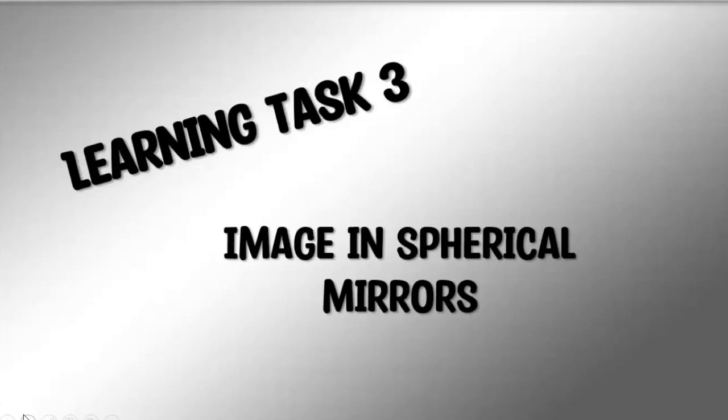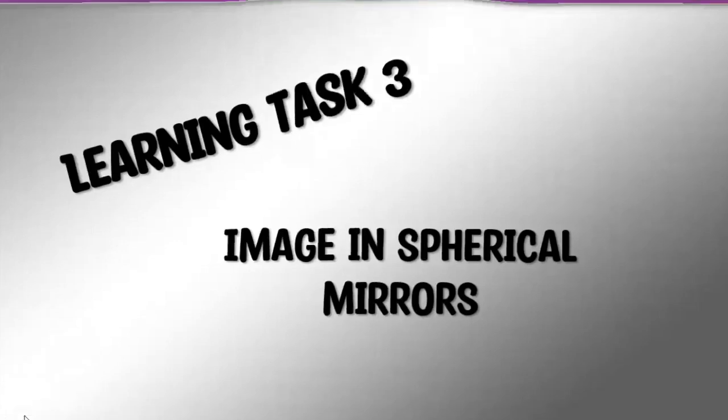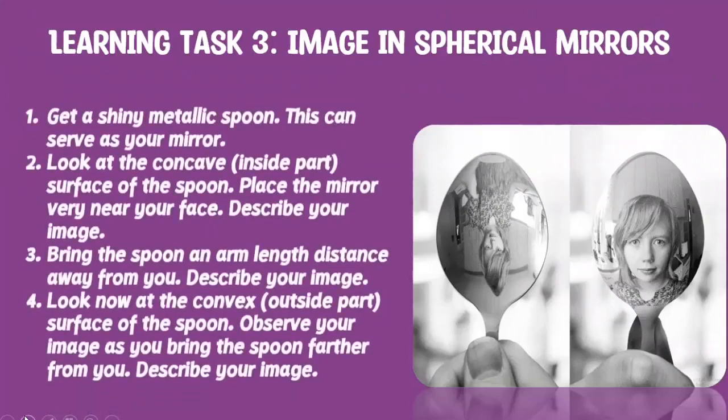It's time for your learning task 3: images in spherical mirrors. Get a shiny metallic spoon to use as your mirror. Look at the concave or inside part surface of the spoon, then place the mirror very near your face and describe your image. Then look at the convex or outside part surface of the spoon, observe your image as you bring the spoon further from you, and describe your image.